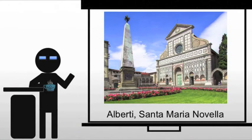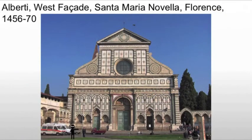First to look at the inside, then Masaccio's Holy Trinity, which of course is painted in Santa Maria Novella, and now looking at the facade. Commissioned by the Ronselli family, Alberti was asked to add a facade for the 13th century church of Santa Maria Novella. This is one of the major churches of Florence — it's also the church for a Dominican monastery.